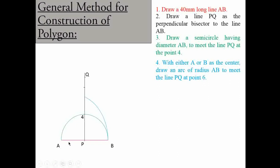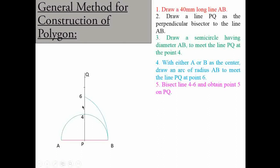Then we bisect the line from point 4 to point 6 to obtain point 5 on PQ. By taking a distance greater than half of 4 to 6 in the compass, we draw arcs from both centers toward the left and right, and the horizontal bisector line intersects PQ — that intersection point is named point 5.